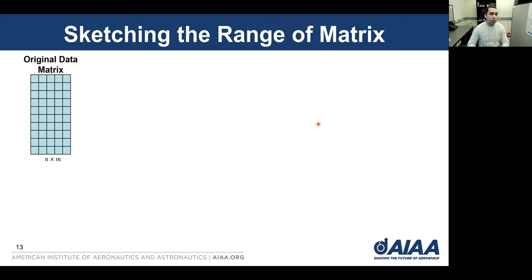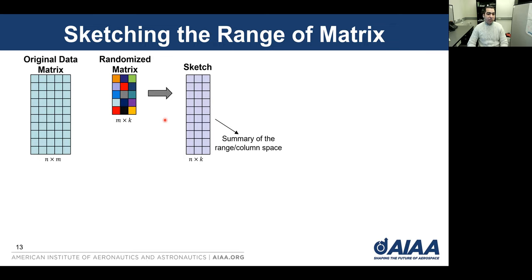For example, we might be willing to preserve information about the range of a matrix or its column space. We define a randomized matrix with a target rank K and let our original matrix act on this matrix by multiplication to get this smaller matrix.